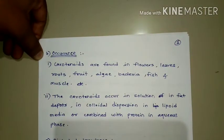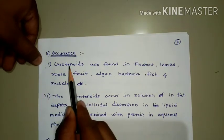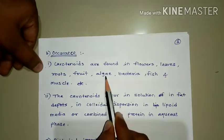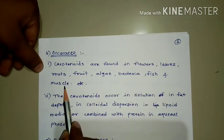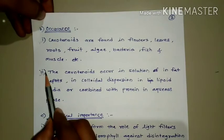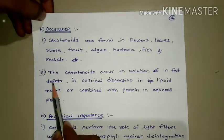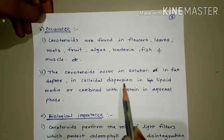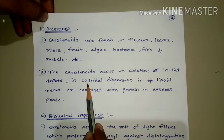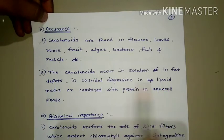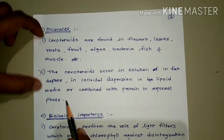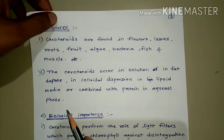Next is the occurrence of carotenoids. First point: carotenoids are found in flowers, leaves, roots, fruits, algae, bacteria, fish, and muscles. Second, carotenoids occur in solution in fat depots and in colloidal dispersion in lipoids — colloidal dispersion means the compound contains solid, liquid, and gas in lipoid form — or combined with protein in an aqueous phase.